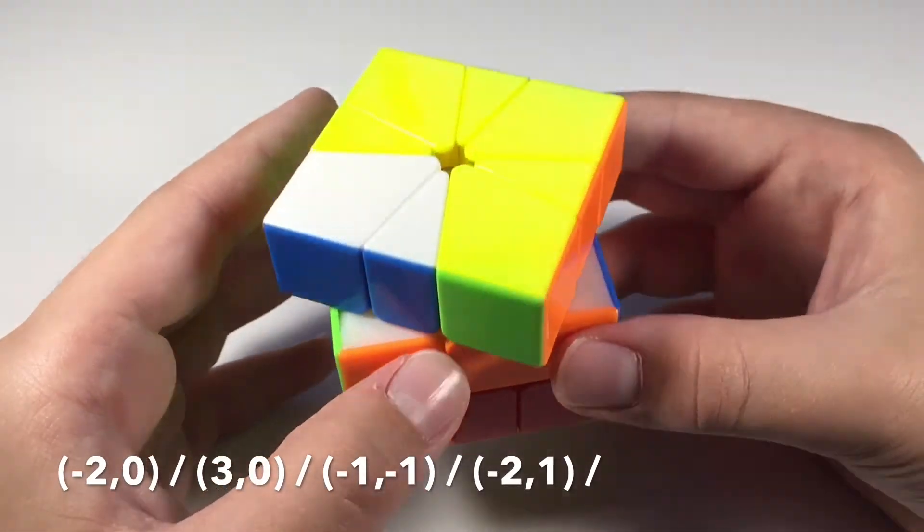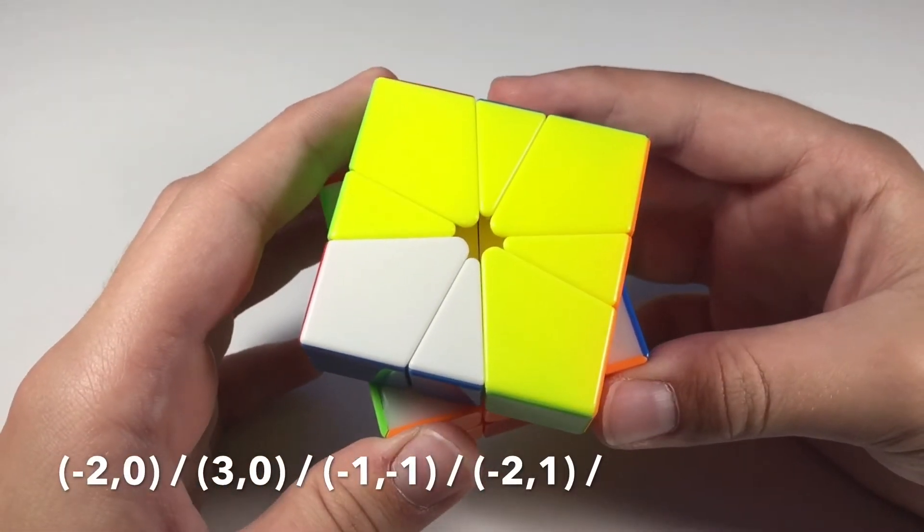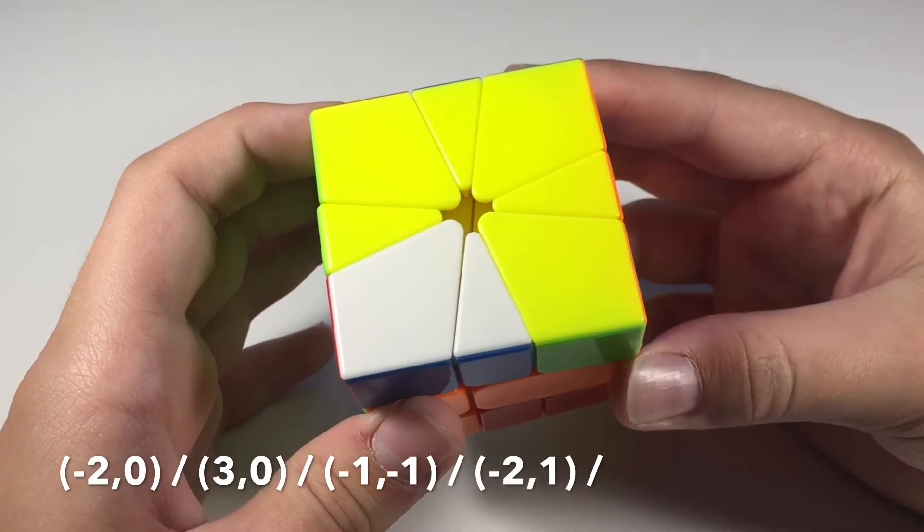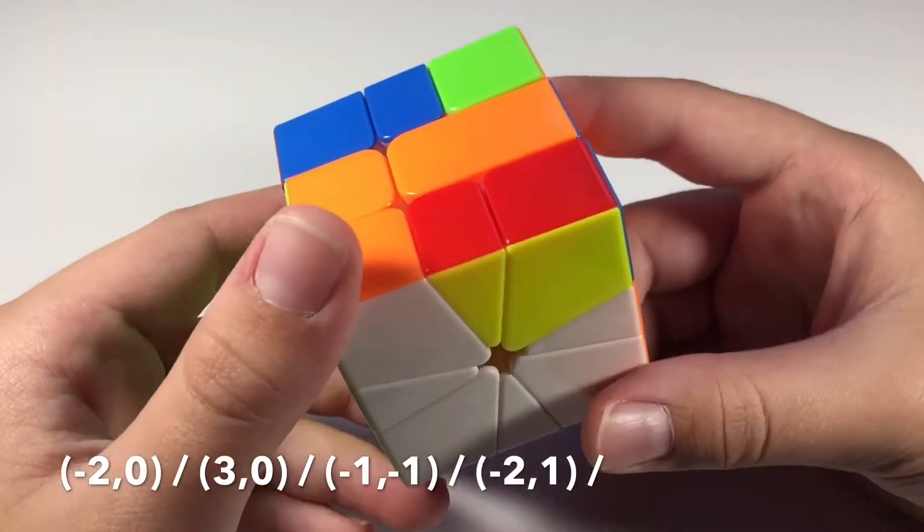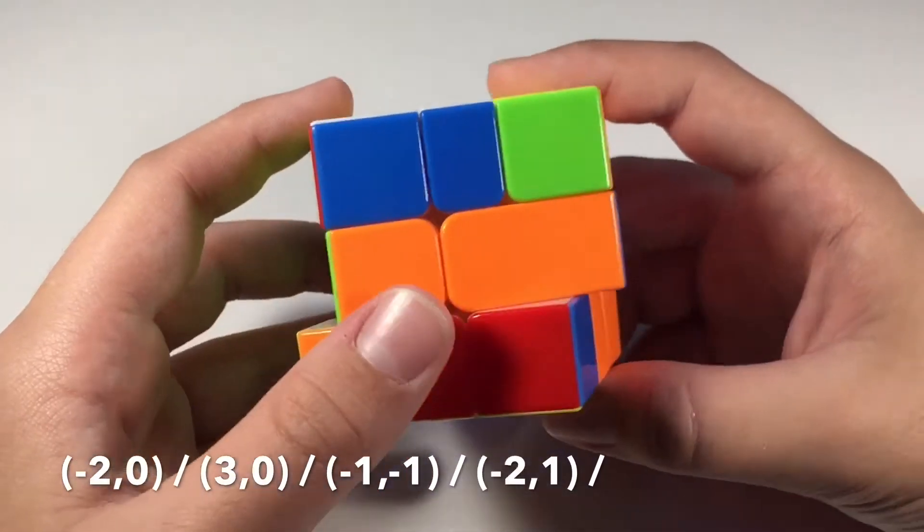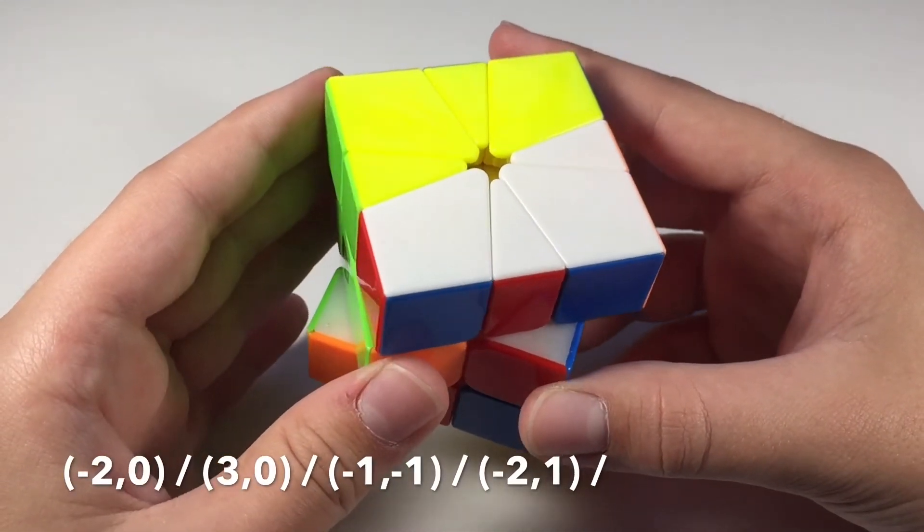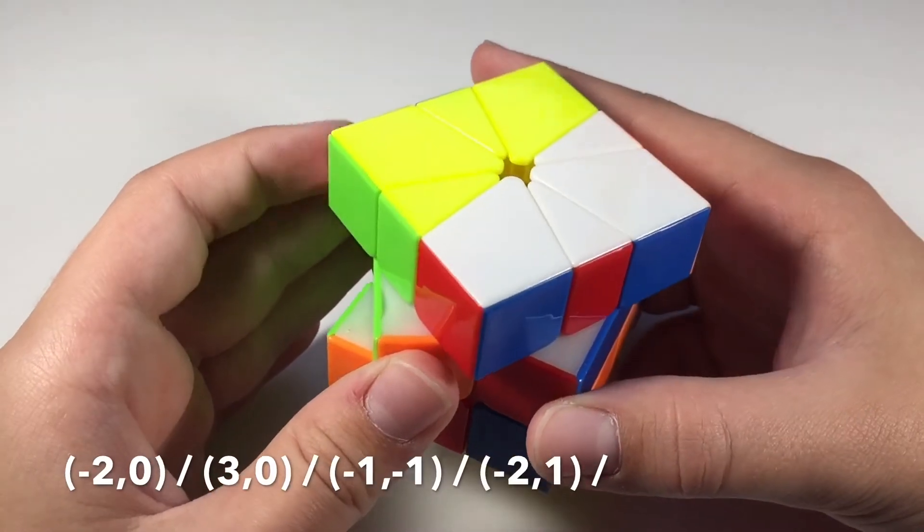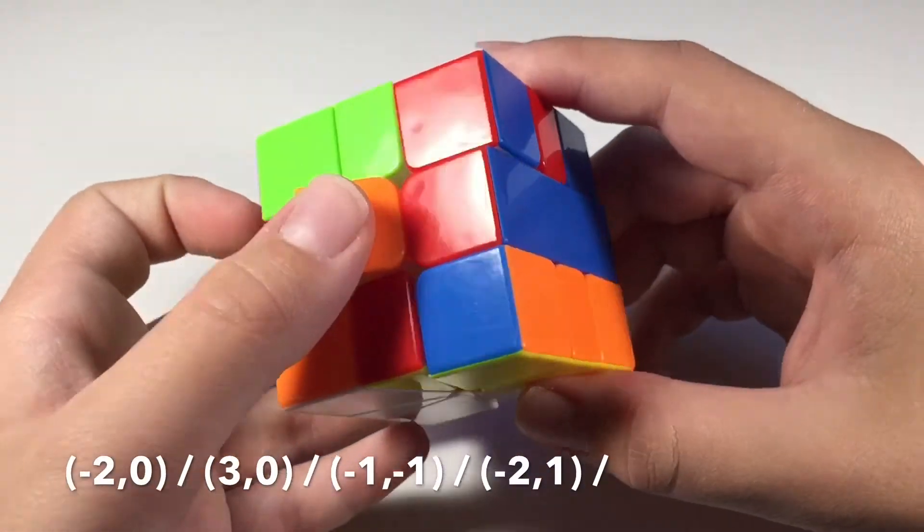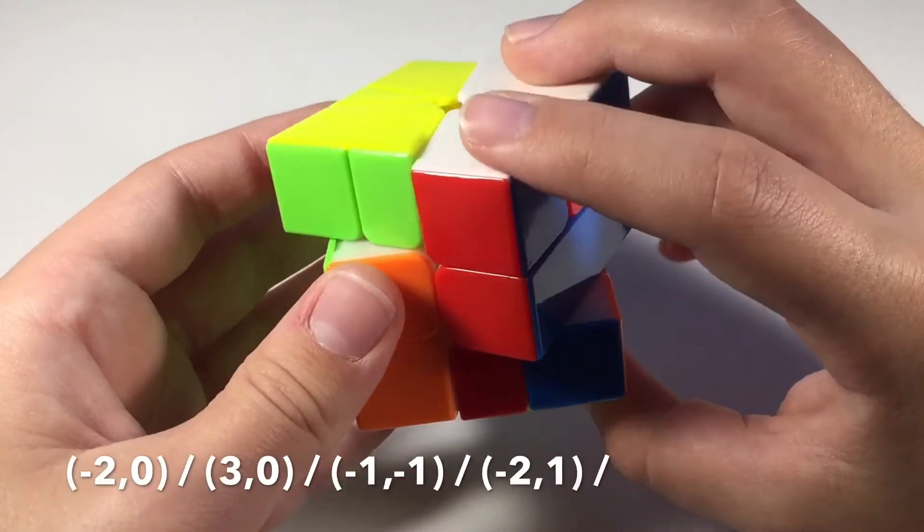Slash negative 1, negative 1—so this moves 1 counterclockwise, and this moves 1 counterclockwise. Slash, then negative 2, 1, slash.